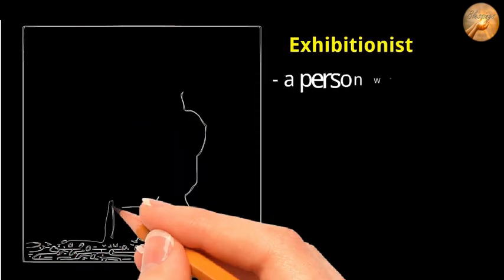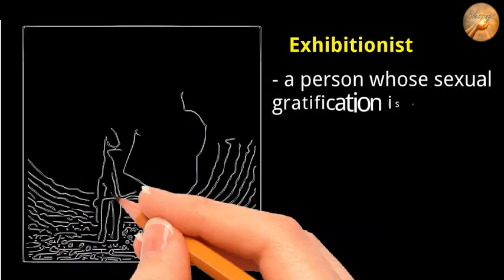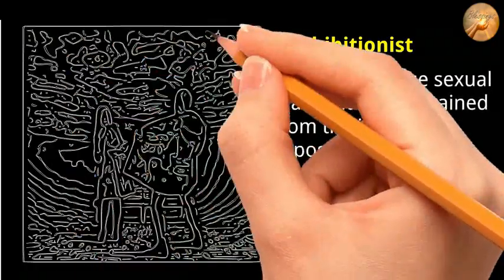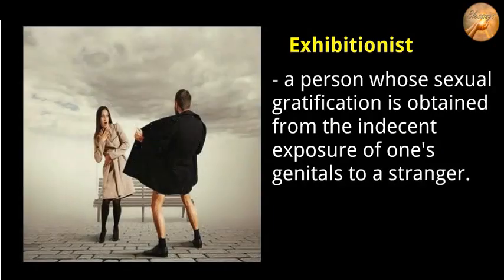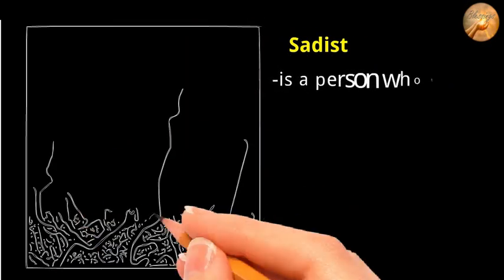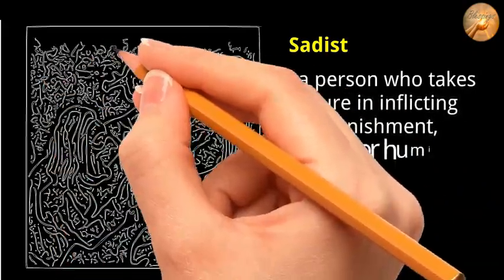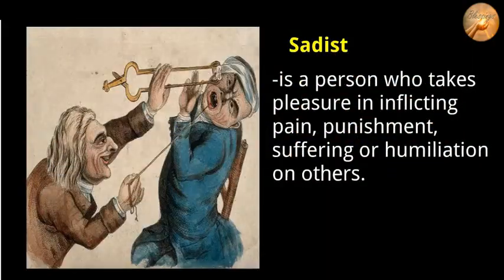An exhibitionist is a person whose sexual gratification is obtained from the indecent exposure of one's genitals to a stranger. A sadist is a person who takes pleasure in inflicting pain, punishment, suffering, or humiliation on others.